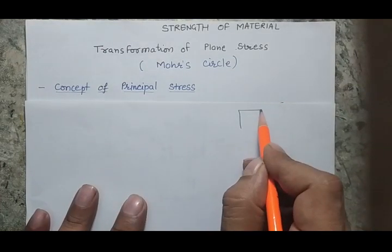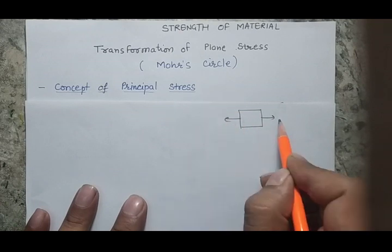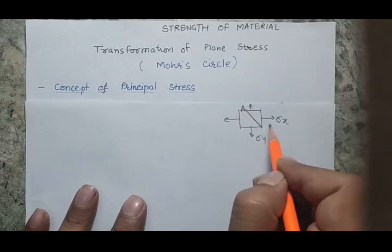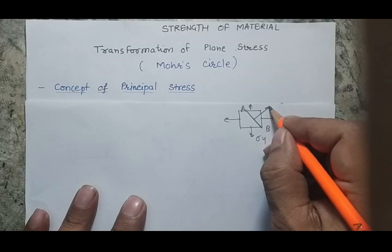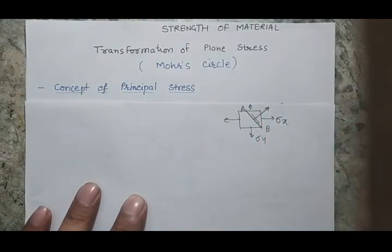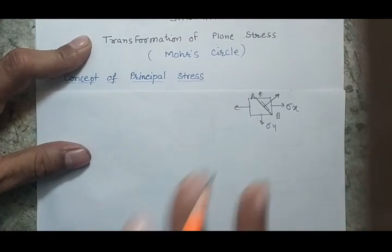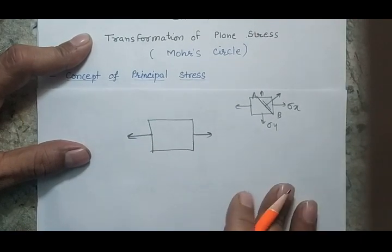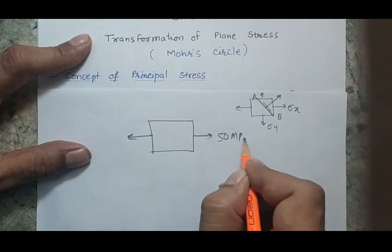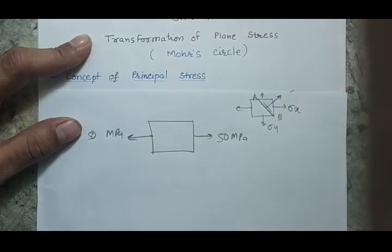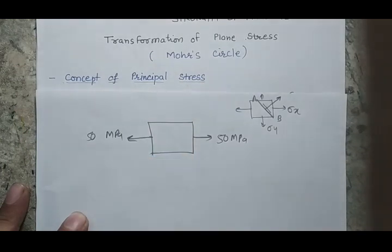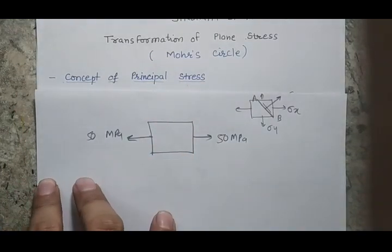Let me give you a recap: we have studied that if we have a strained member and we are applying stresses on this member, we can find the stress at plane AB — both the normal stress and the shear stress on this plane. Now, this is the topic where we are going to cover one of the important concepts, that is the principal stress. Here we will try to understand what principal stress is.